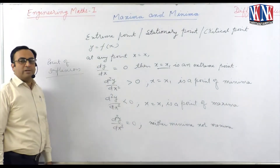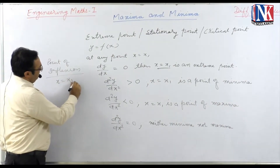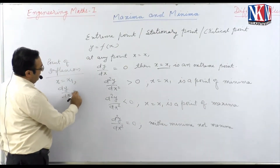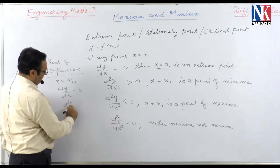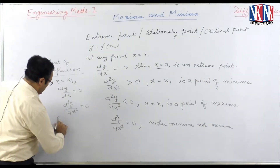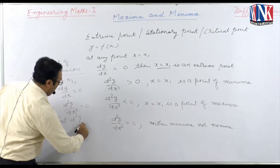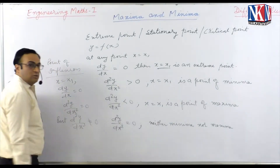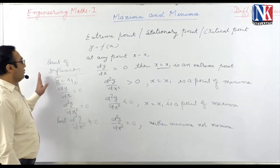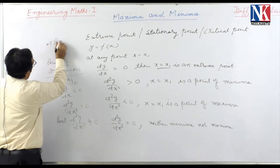Point of inflection is defined as follows: suppose x = x₁ is a point where dy/dx = 0 and d²y/dx² = 0, but d³y/dx³ ≠ 0. Then such a point x = x₁ is known as a point of inflection, called 'nati parivartan bindu' in Hindi.